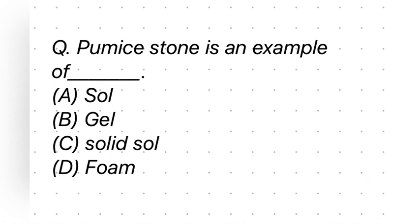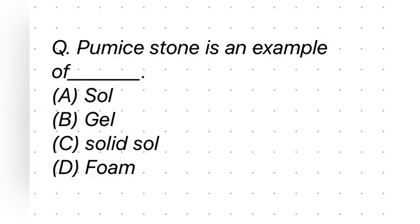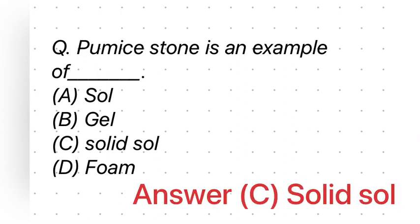Pumice stone is an example of Solid Sol. From the structure, we can see that gas is dispersed in solid as the dispersion medium. So the correct answer to this question is C, that is Solid Sol.